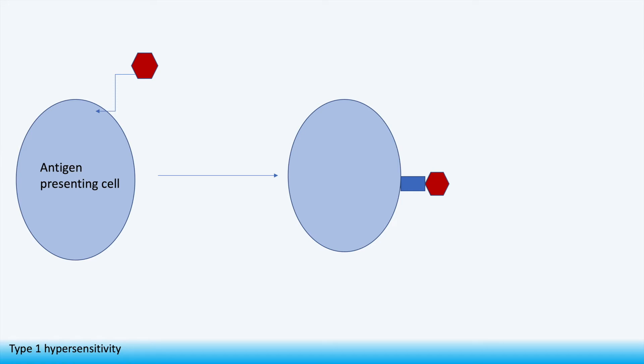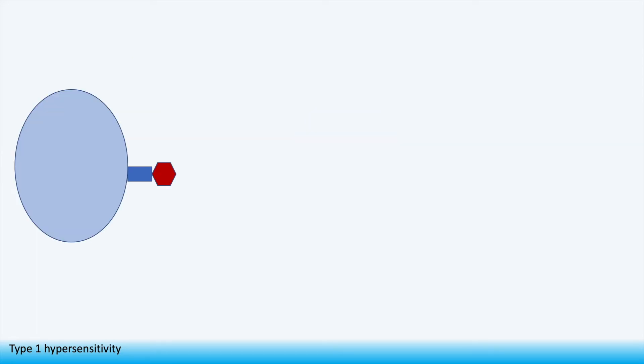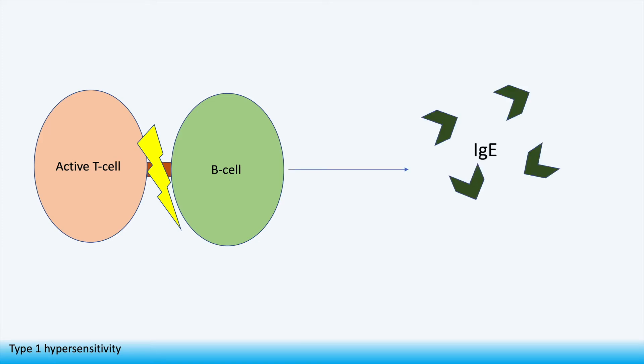Next the antigen presenting cell takes its MHC2 receptor with the fragment and uses it to bind to an inactive T helper cell via the T cell receptor or TCR. The active T helper cell then releases interleukin-4 and interleukin-5 and activates a B lymphocyte which begins to produce IgE after stimulation.